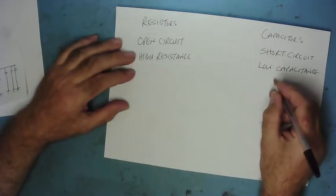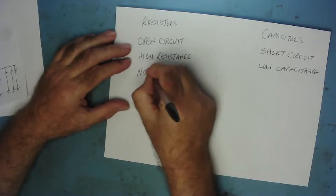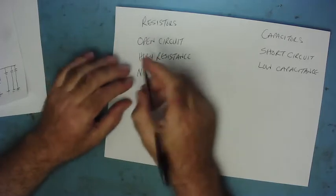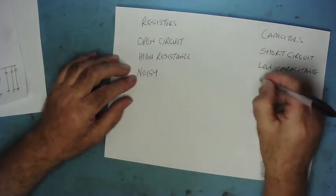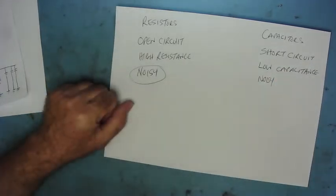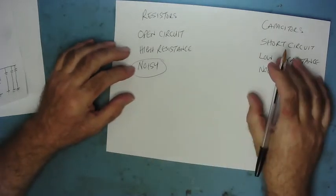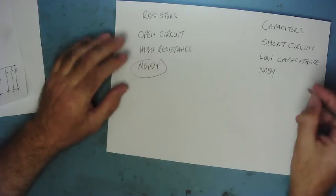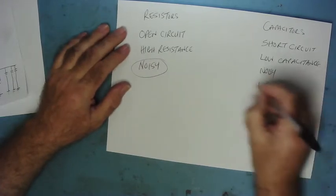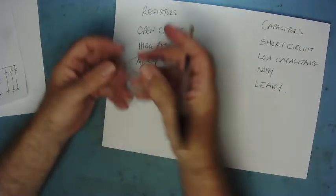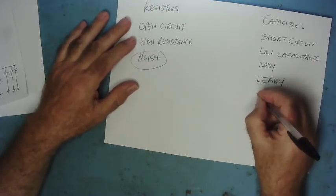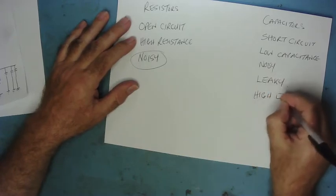Capacitors have other ways to fail. We mentioned with resistors they can go noisy — microscopic cracks, resistance varying and producing noise in the signal. Capacitors can do the same thing, they can go noisy, but it's more common with resistors. Capacitors also fail in ways that resistors can't. They go leaky, as I've just mentioned — and this is electrically leaky, not an electrolytic capacitor where all the fluid leaks out. They can also fail where they go high ESR.